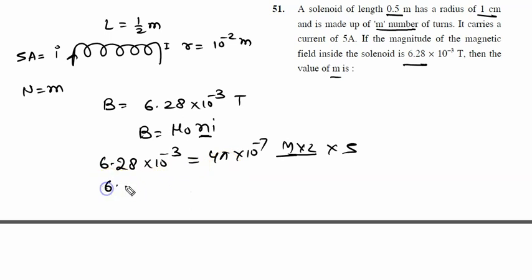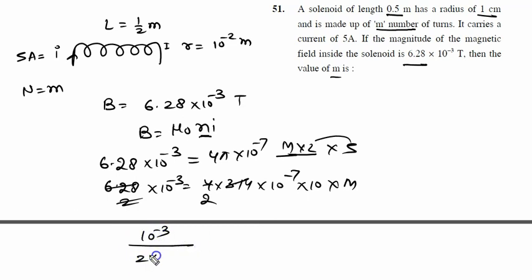So 6.28 into 10 raised to power minus 3 equals 4 into 3.14 into 10 raised to power minus 7 times 2m times 5. This gives us 10 raised to power minus 1 minus 6 equals m, which means 10 raised to power minus 3 upon 2. So m is 1000 upon 2, that is 500.